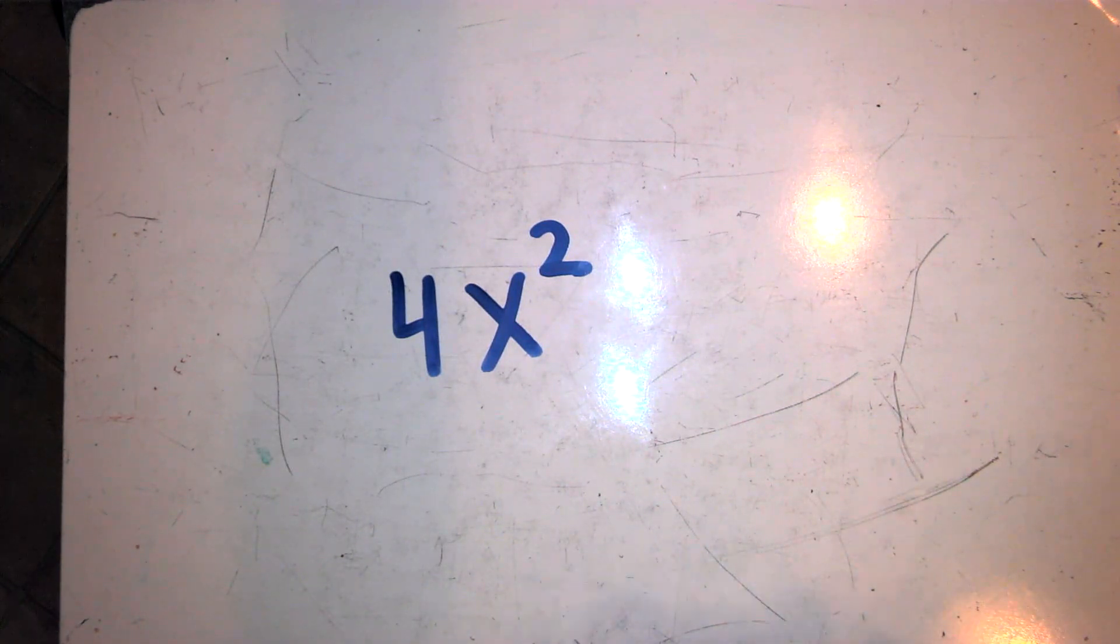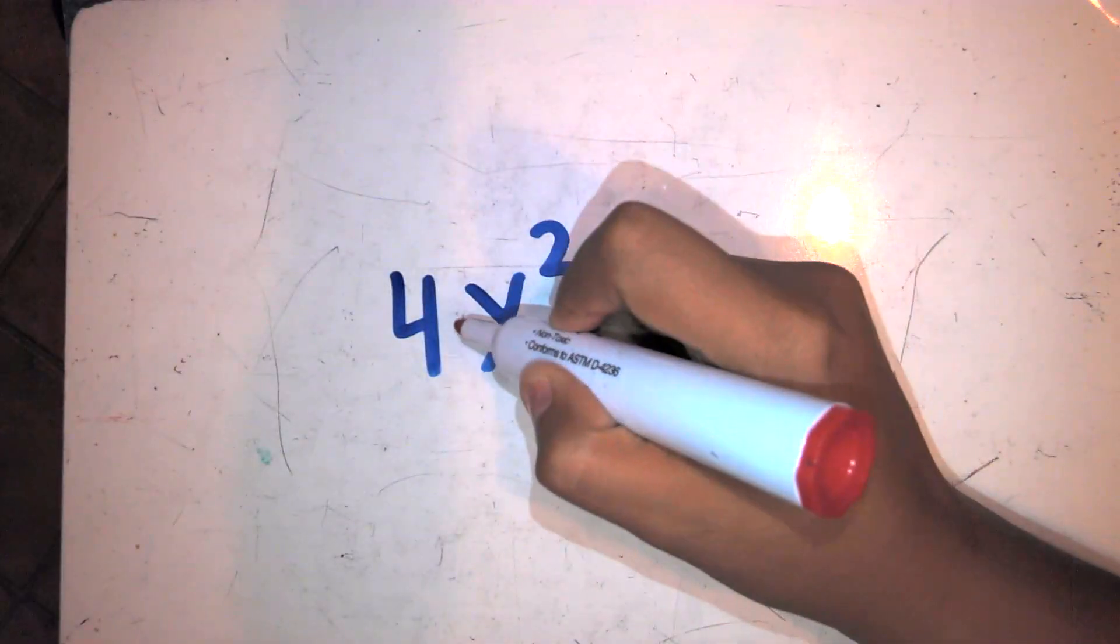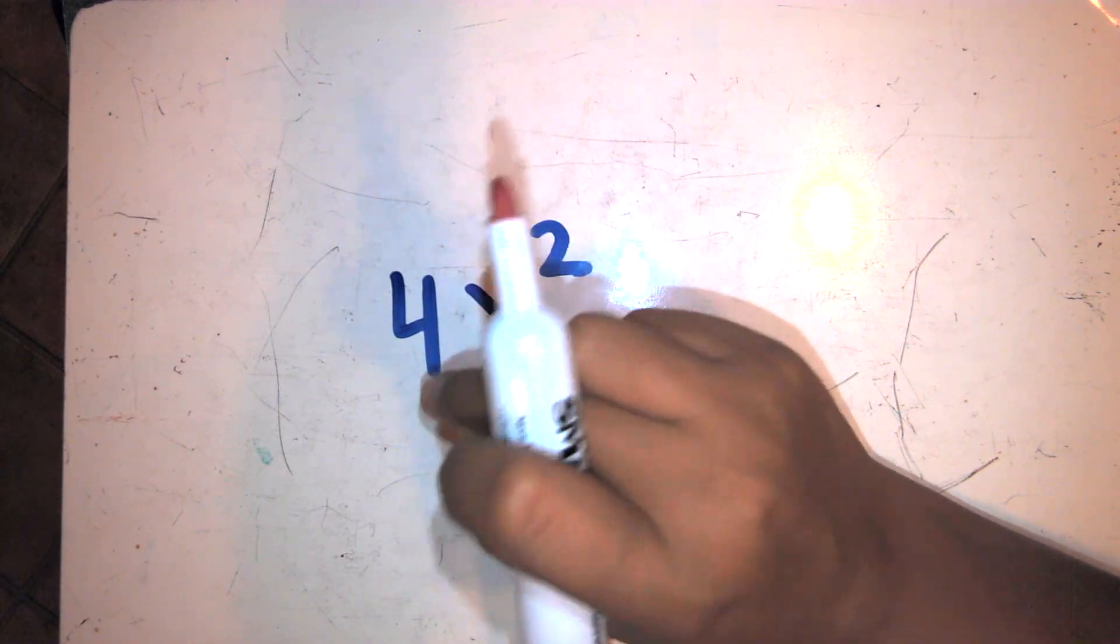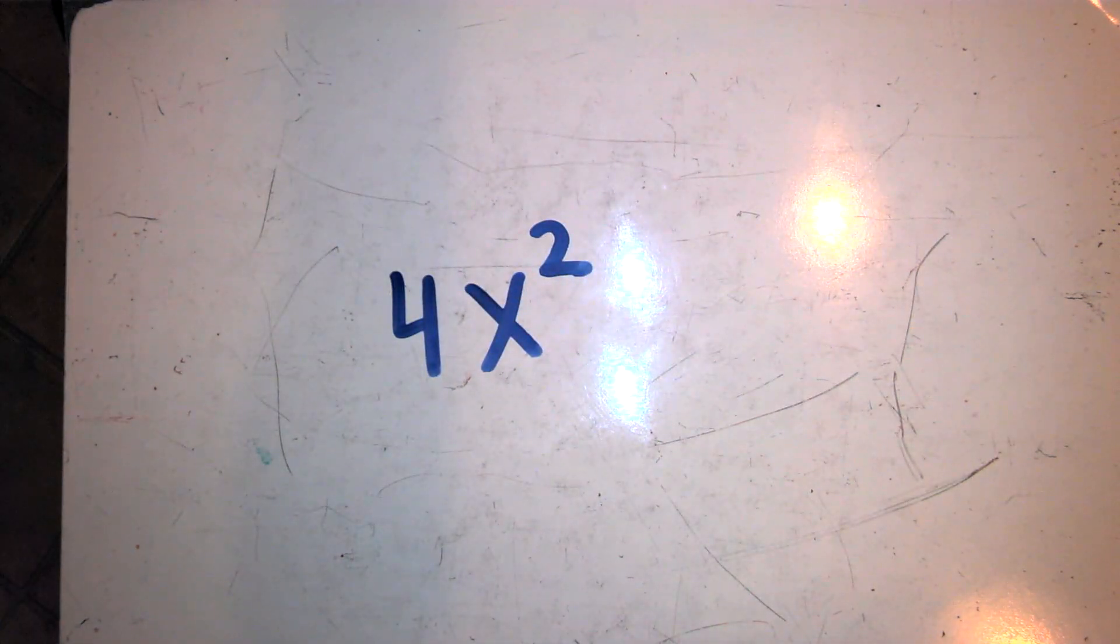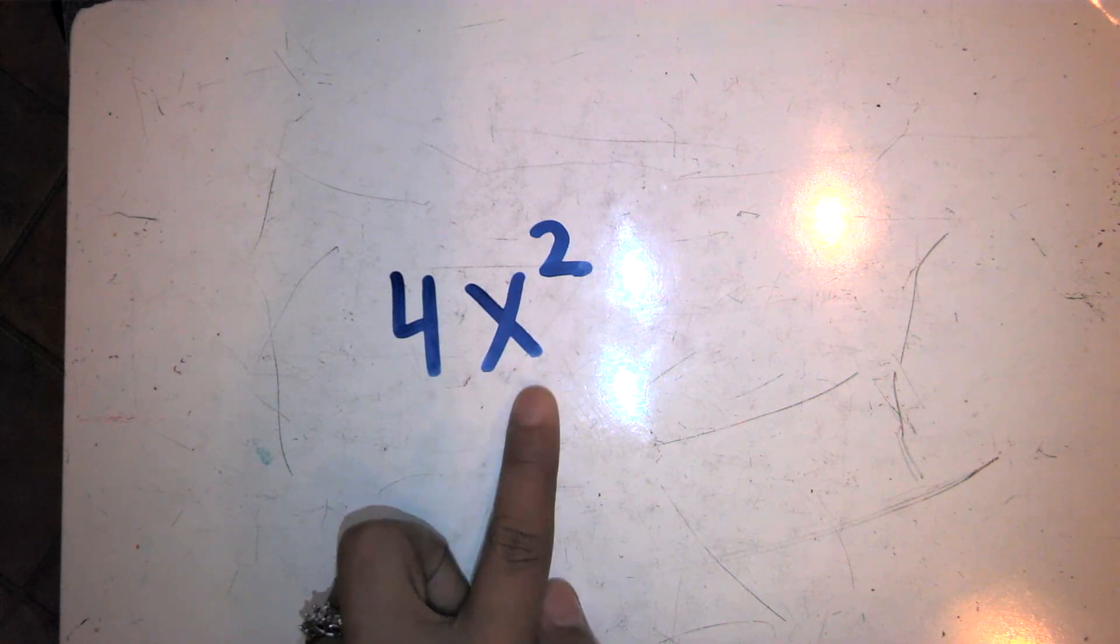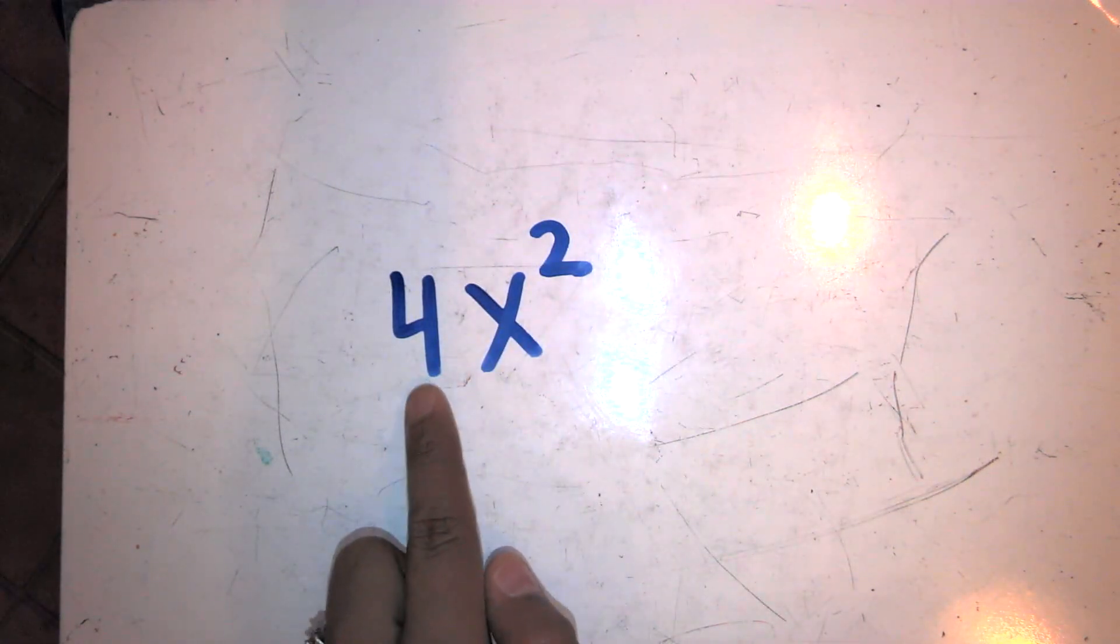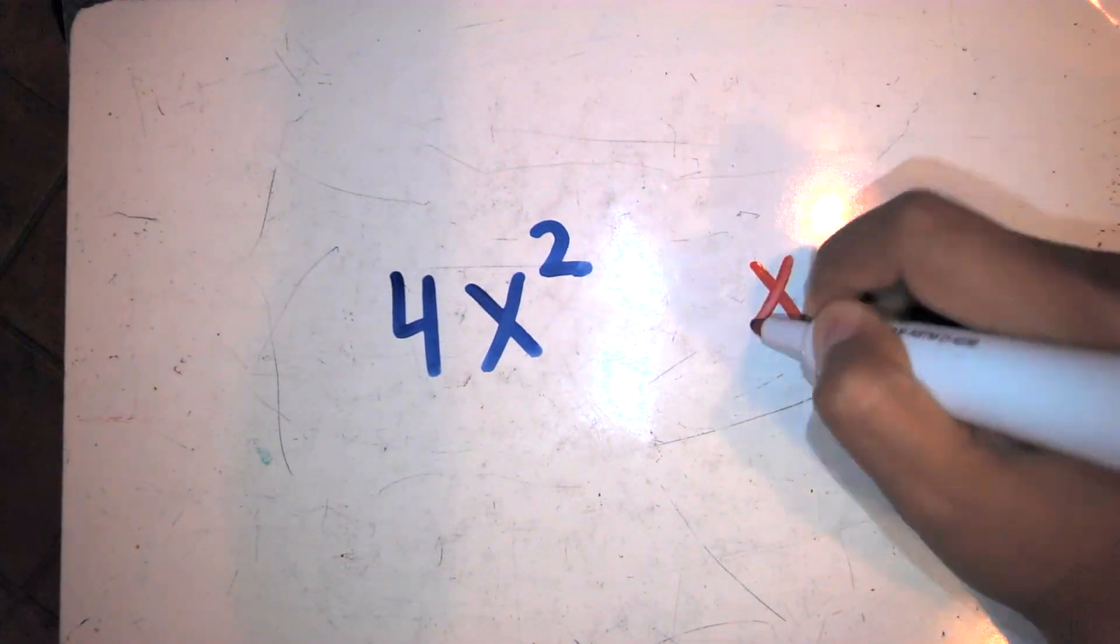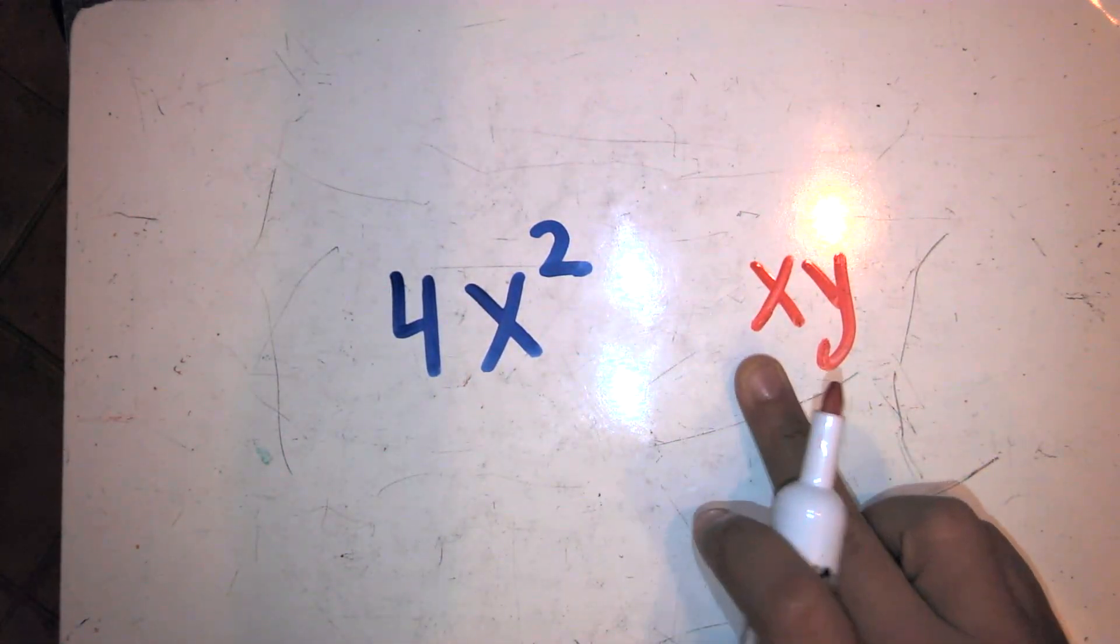I said times because there's an invisible multiplication symbol. When you don't see a symbol like addition or subtraction or division in front of a variable, then you can assume that the number or variable is being multiplied to each other. So 4x squared is really 4 times x to the second power, just like xy is x times y.